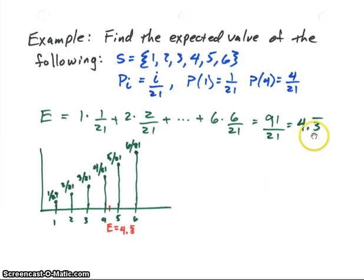Now let's look at another example. Find the expected value of this sample space. The sample space, again, is still 1 through 6. But in this case, the probability of each one of them is just going to be the value in that sample space divided by 21. So the probability of 1 is 1/21. And as another example, probability of 4 is 4/21.